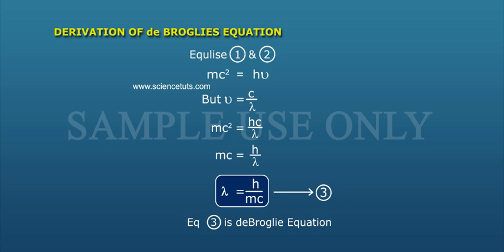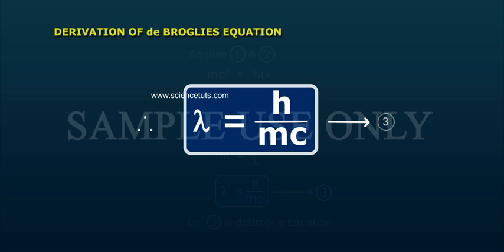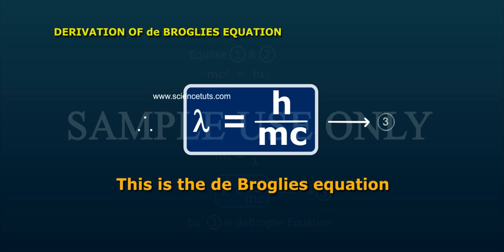But nu is equal to C by Lambda. So MC square is equal to H C by Lambda. Cancel C on both sides: MC is equal to H by Lambda. Therefore, Lambda is equal to H by MC, Equation 3. This is de Broglie's Equation.